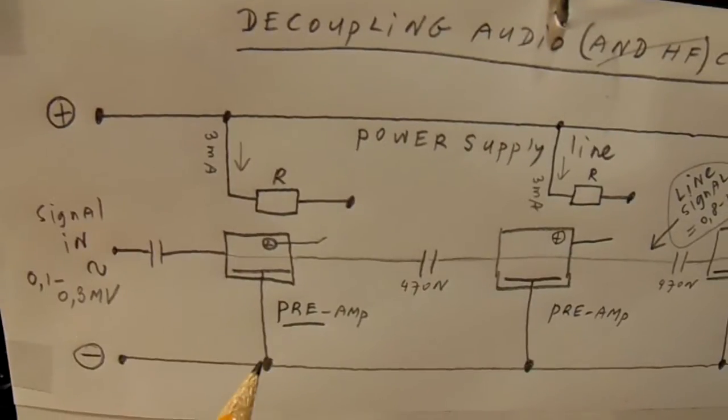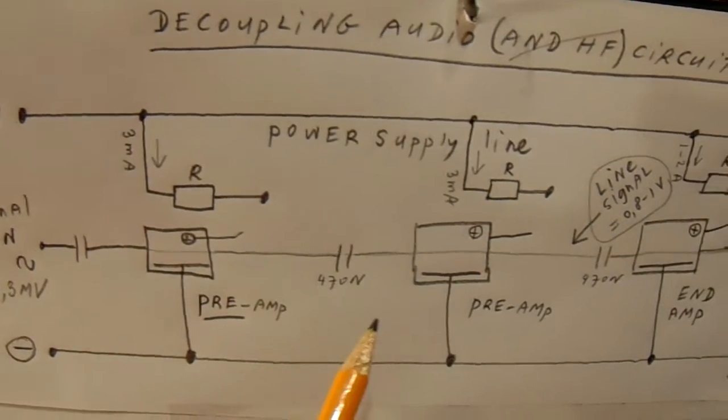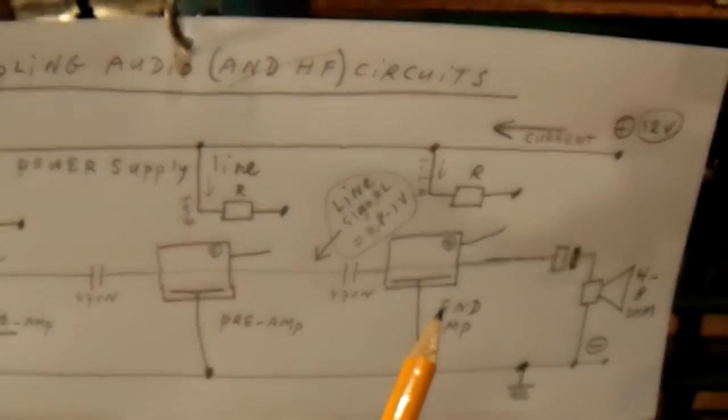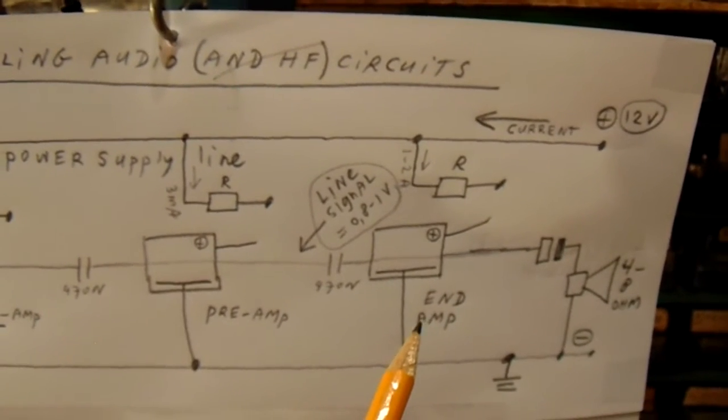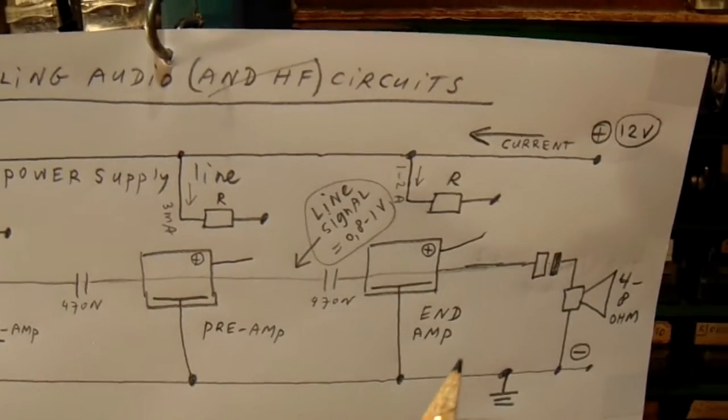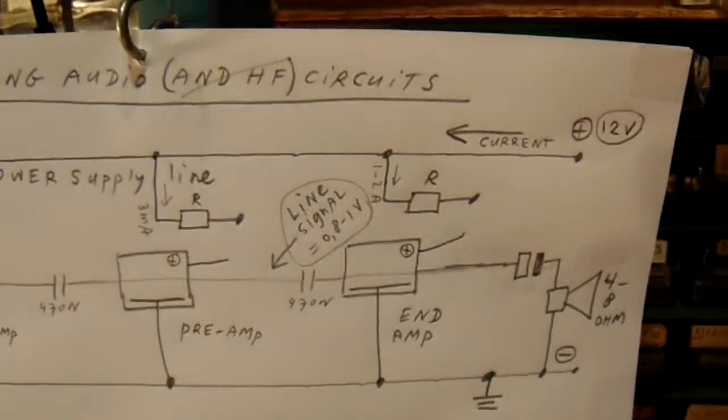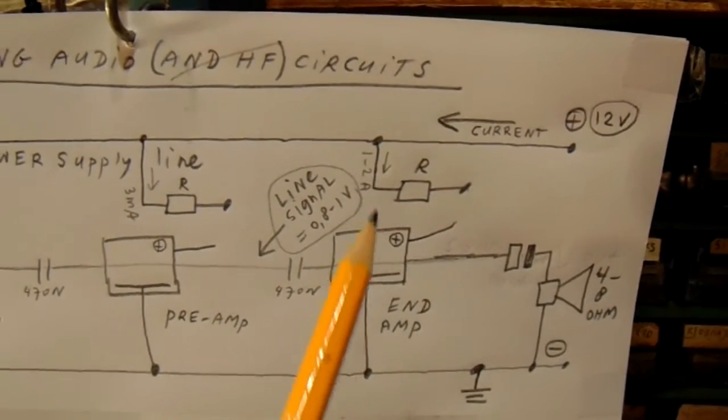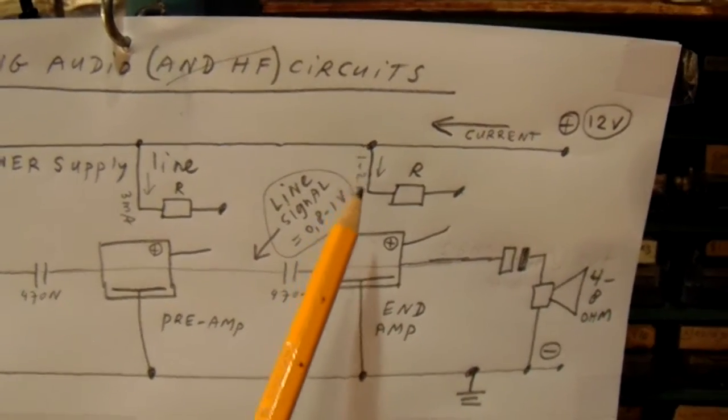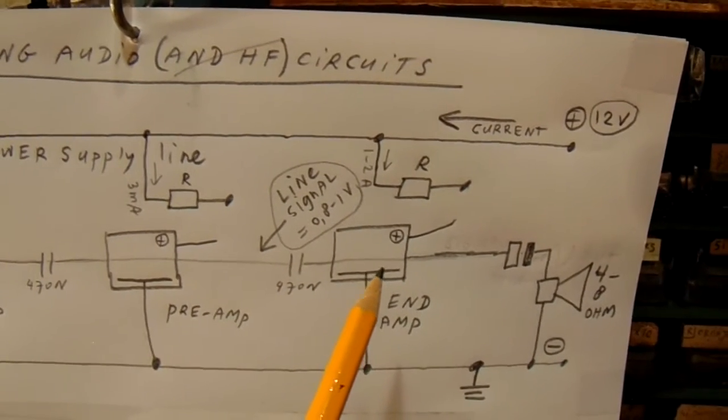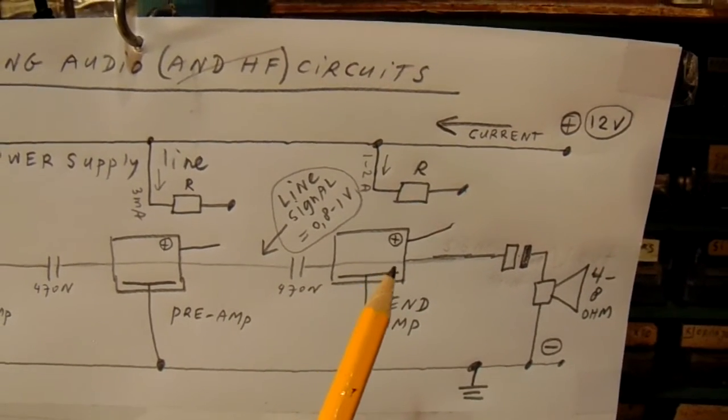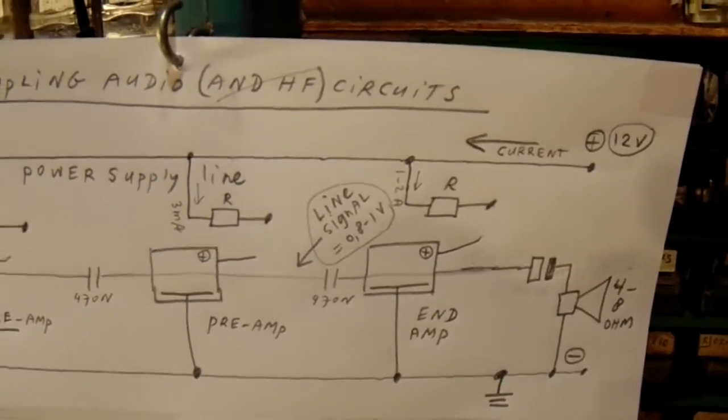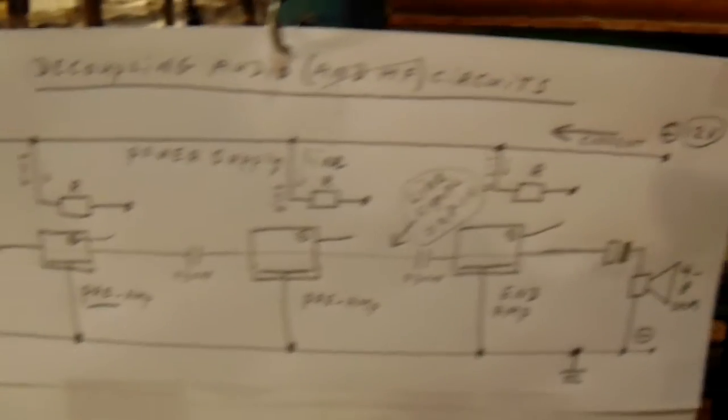The first stage a pre-amp, second stage also a pre-amp, and the third stage an end amplifier. Of course we know that an end amplifier takes a substantial current, that means the current to the amplifier must not be limited too much, and the basic circuit from the decoupling unit is this.